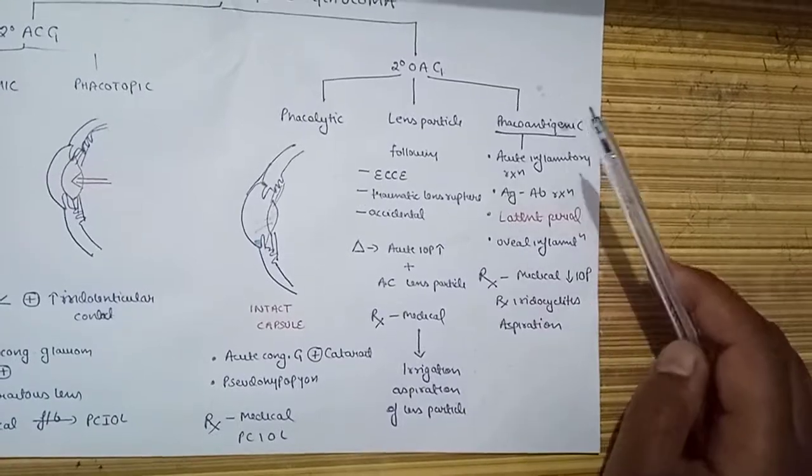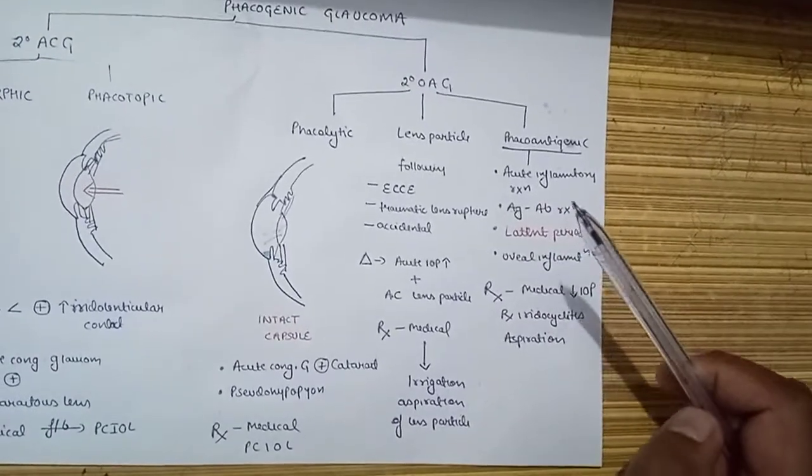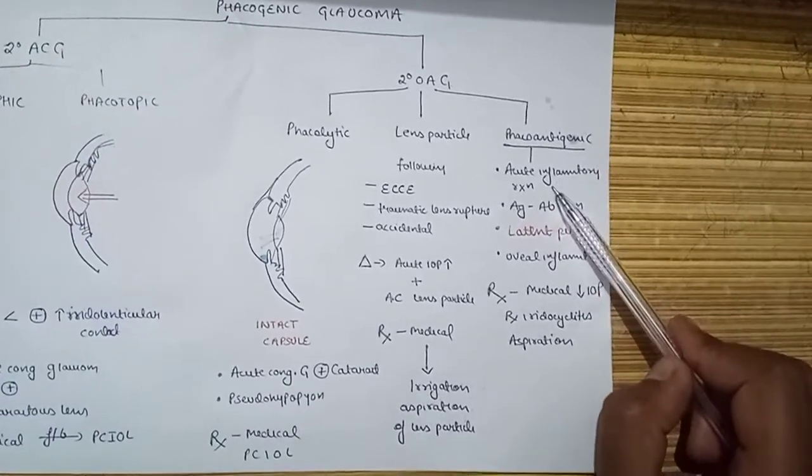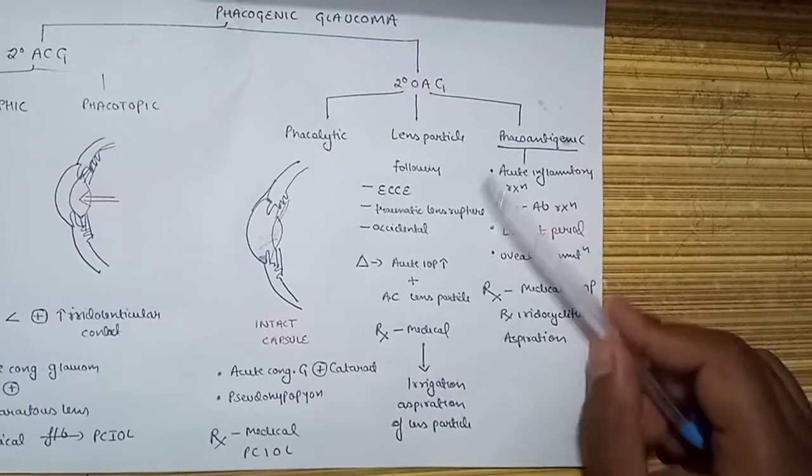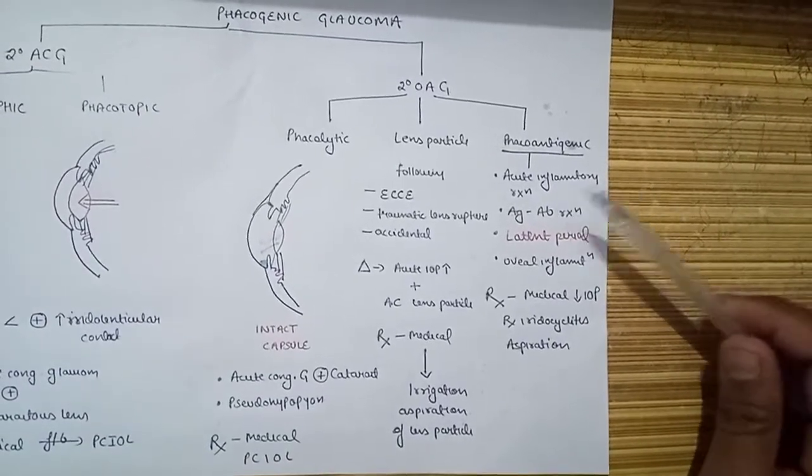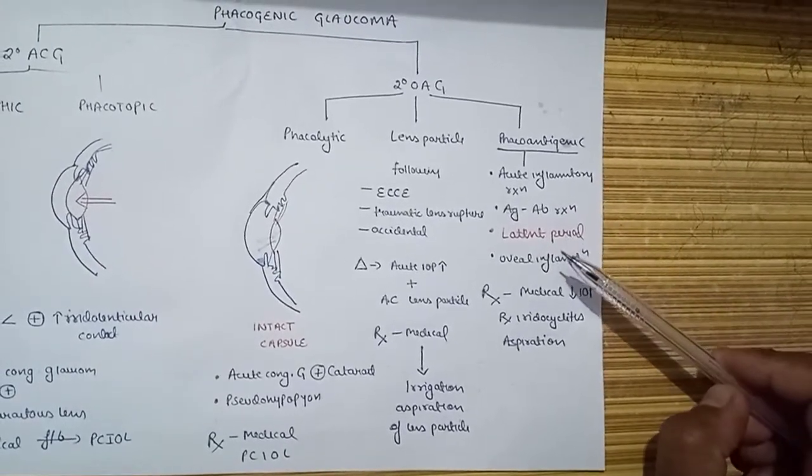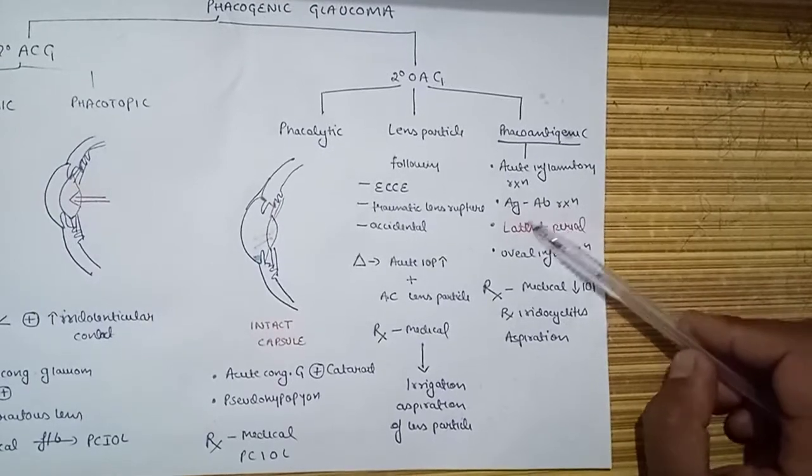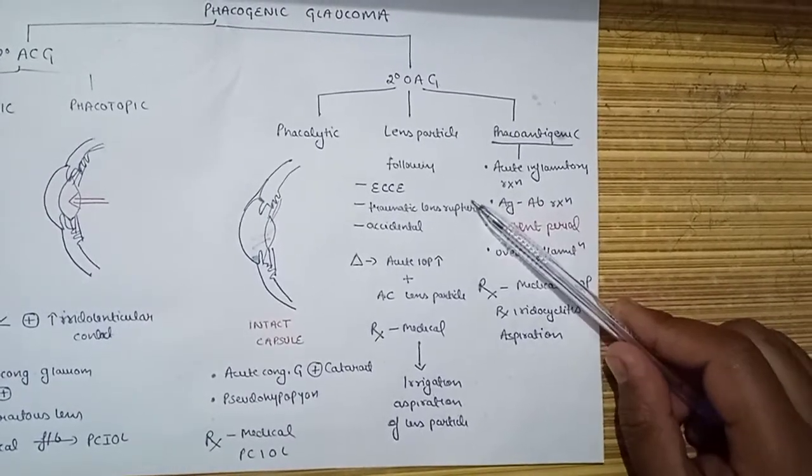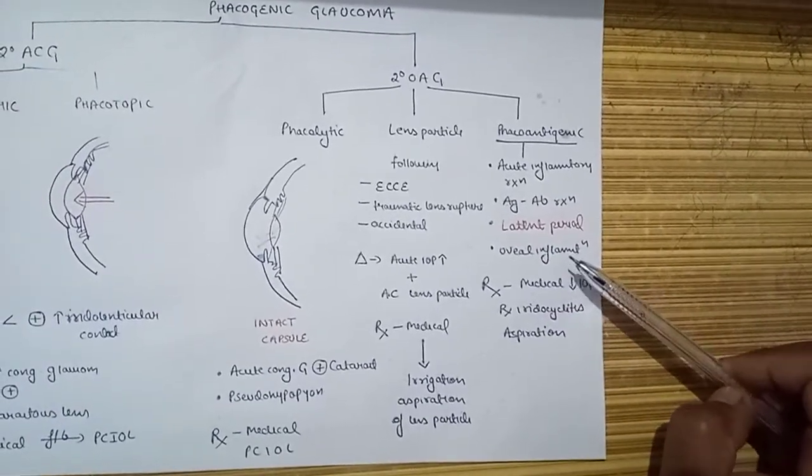The last one is phacoantigenic glaucoma. Here, an antigen-antibody response occurs, and this is an acute inflammatory reaction involving uveal tissue of the eye. The main point is that the phacoantigenic reaction occurs after a latent period of injury following accidental or lens rupture.